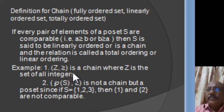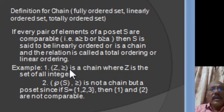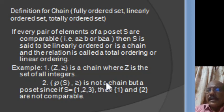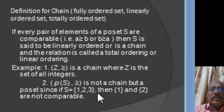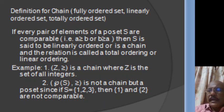For example, in (Z, ≥) where Z is the set of all integers, any two integers are comparable. Therefore, (Z, ≥) is a chain. On the other hand, the partially ordered set (P(S), ≥) is not a chain, because in this partially ordered set, if S = {1, 2, 3}, then the elements {1} and {2} are not comparable. So it is simply a partially ordered set but not a chain.